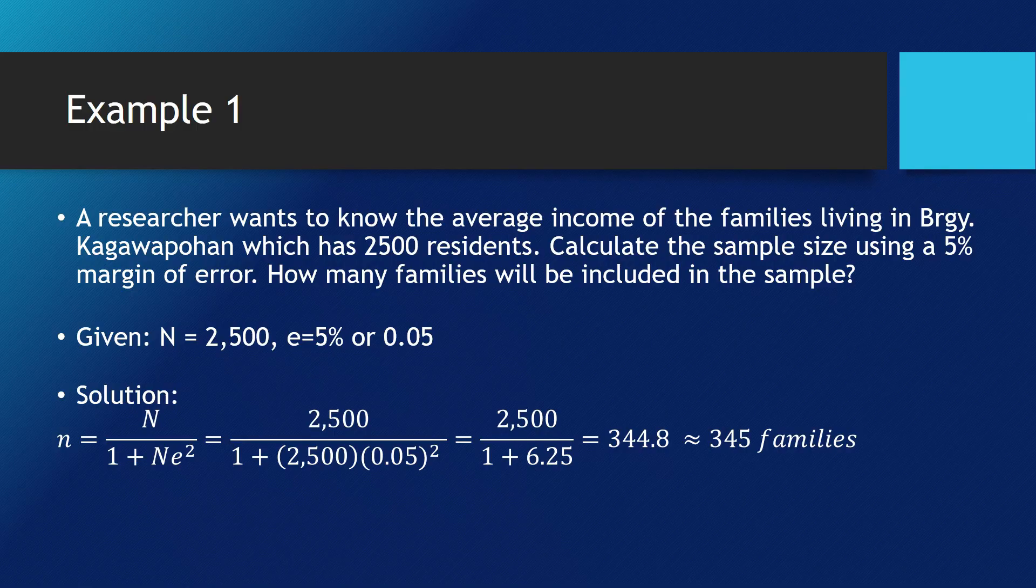Now, it's time to operate this. We have 2,500 divided by 7.25 and we got an answer of 344.8. Take note, these are families, so we are not going to accept decimals. We are going to round it up to the nearest whole number.